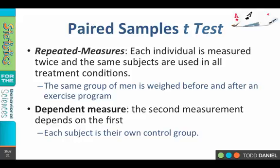For example, we have the same group of men who are weighed before an exercise program. Then they work out for six weeks and we measure them again after the exercise program. Hopefully we see that the overall weight of the exercise group has gone down. This is called a dependent measure because the second measurement depends upon the first — your ending weight is a function of your starting weight.